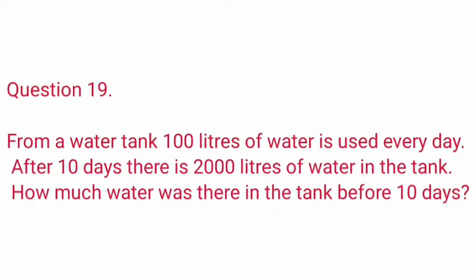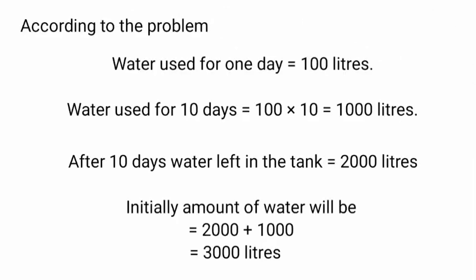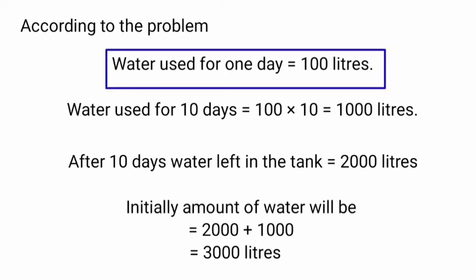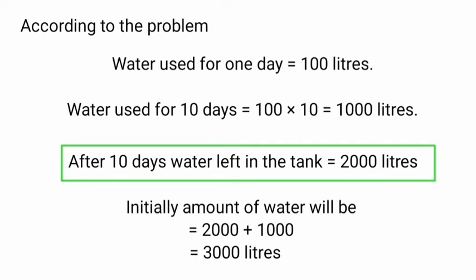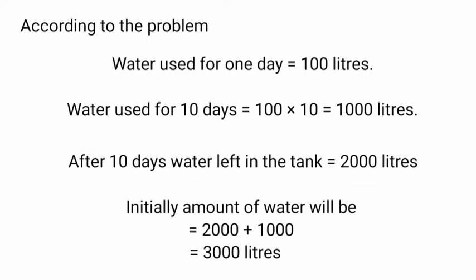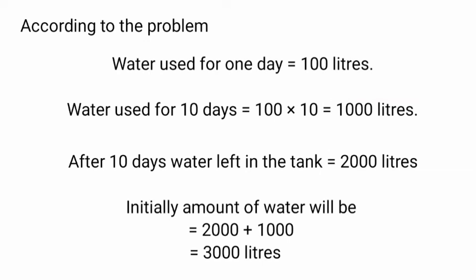From a water tank, 100 litres of water is used per day. After 10 days, there is 2000 litres of water in the tank. How much water was there before 10 days? Water used for 1 day is 100 litres, so water used for 10 days equals 100 into 10, which is 1000 litres. Water left after 10 days is 2000 litres. To find the initial amount, we add: 2000 plus 1000 equals 3000 litres. Therefore, initially there were 3000 litres of water.